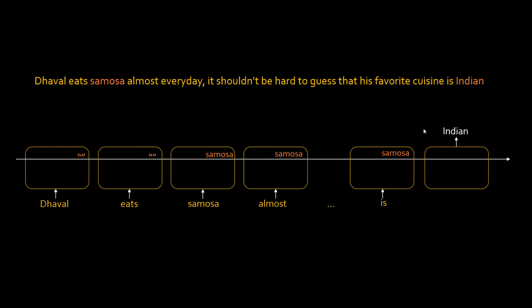What if we build long-term memory along with short-term memory in such a way that we store the meaningful words or the key words into this long-term memory? When I feed 'dawal' or 'eats,' it will not store it in long-term memory. But when you find things like 'samosa,' it will store it. When I go all the way to predicting 'cuisine,' I have that memory that we are talking about samosa and hence it has to be Indian.